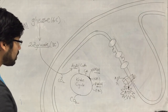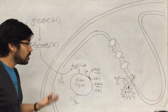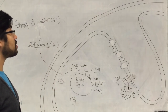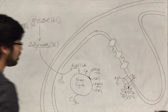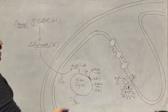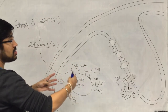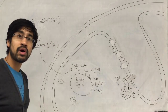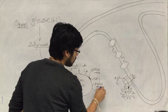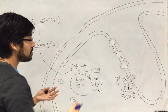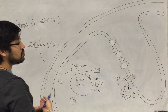As a side product, we also get the release of carbon dioxide — that's the carbon dioxide we produce in the process of respiration. So we've done stage one and stage two, and now the third and final stage deals with what happens to these reduced coenzymes — the reduced NADH and reduced FADH.